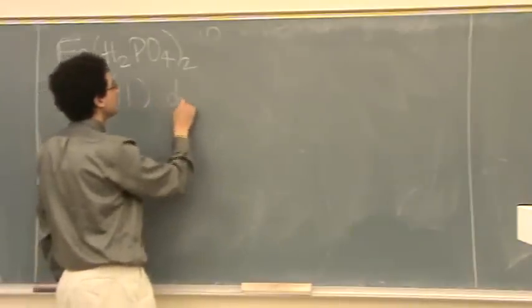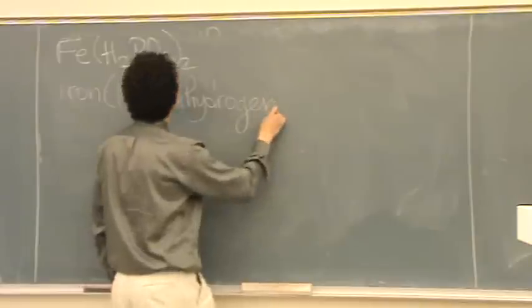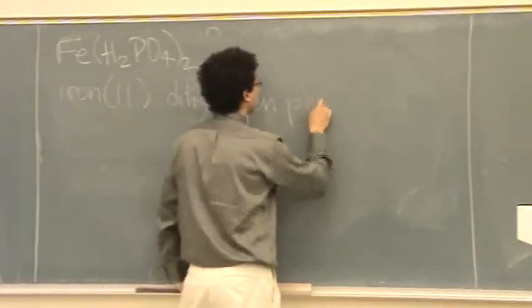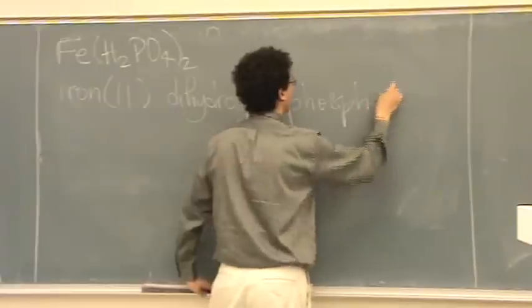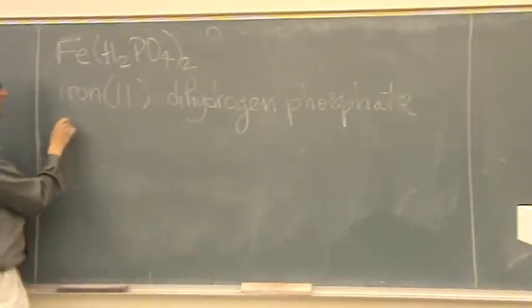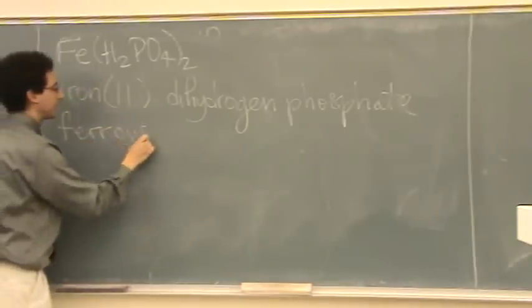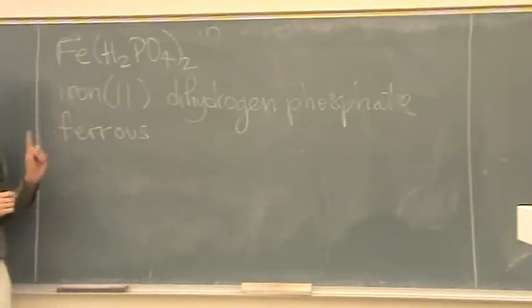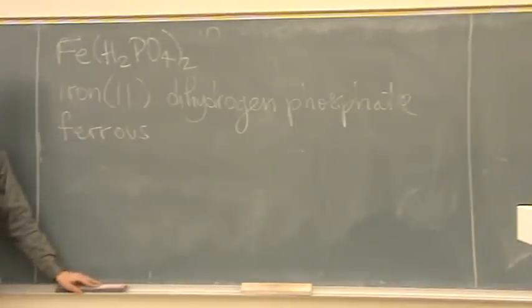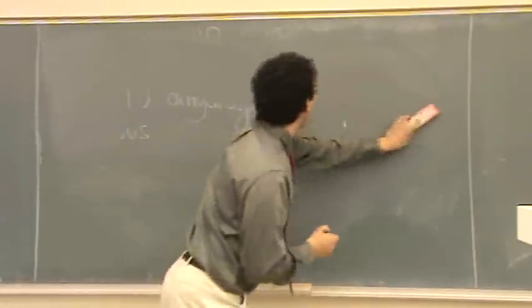So, iron two, this is dihydrogen phosphate. So, iron two dihydrogen phosphate, or an alternate first name, ferrous. Ferrous. That's right. The lower one, because iron can be two or three. Good. Would you like some more? It's up to you all. More ionics? Sure. And then after this, we'll do some acids.